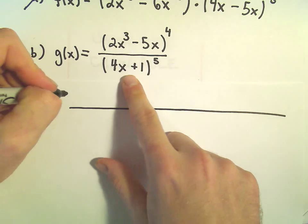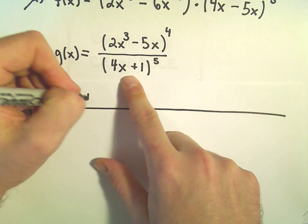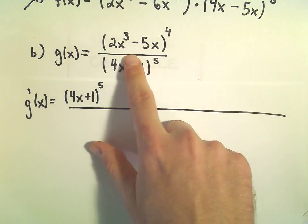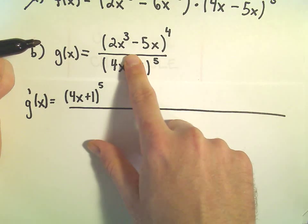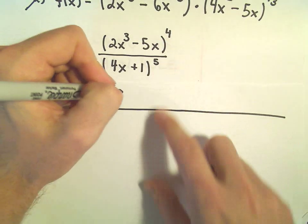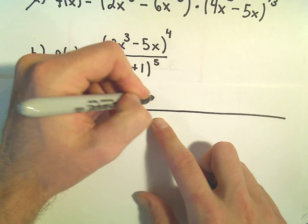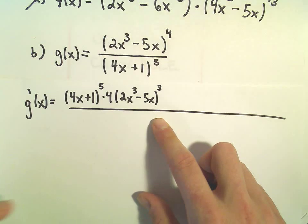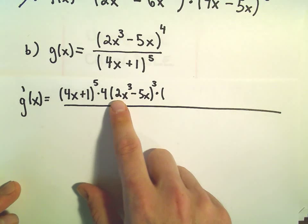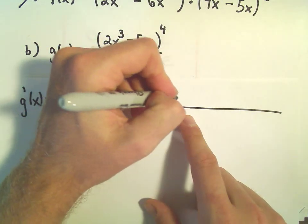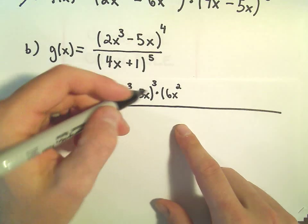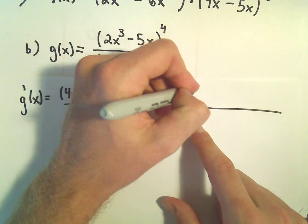Remember the quotient rule says we get whatever's in the denominator, so 4x plus 1 to the 5th, and then we have to take the derivative of whatever's in the numerator. So here we'll have to use the chain rule. The 4 will come out front, we just leave the inside alone, take 1 away from the exponent, and then we multiply by the derivative of the inside. So the 3 times 2 will make 6x squared, and then the derivative of negative 5x will just be minus 5.